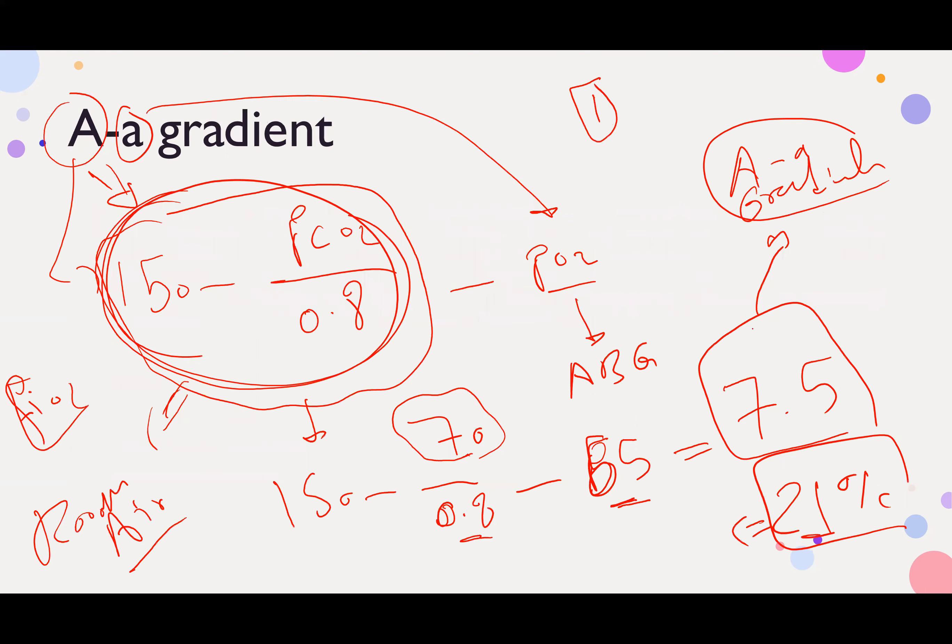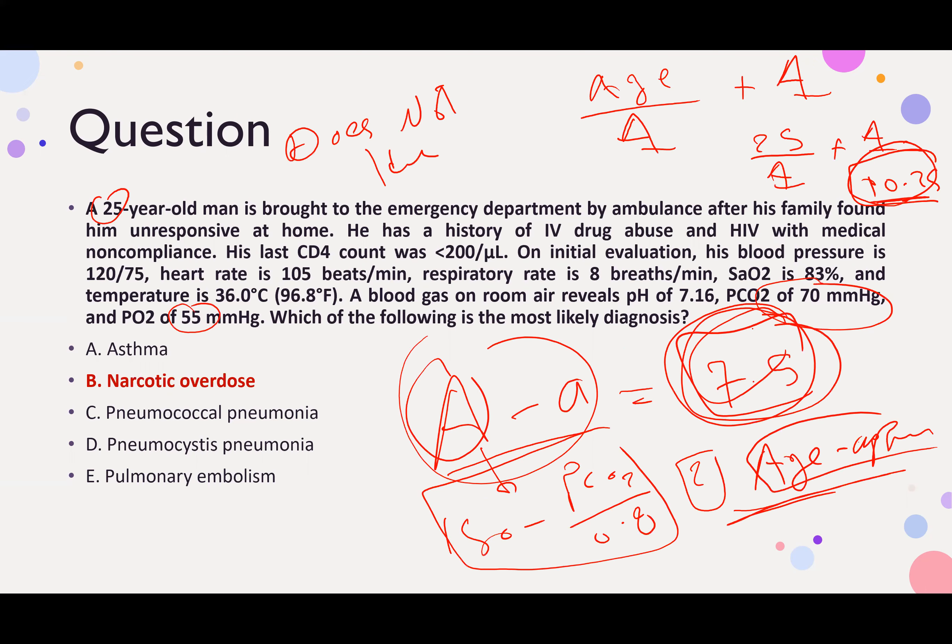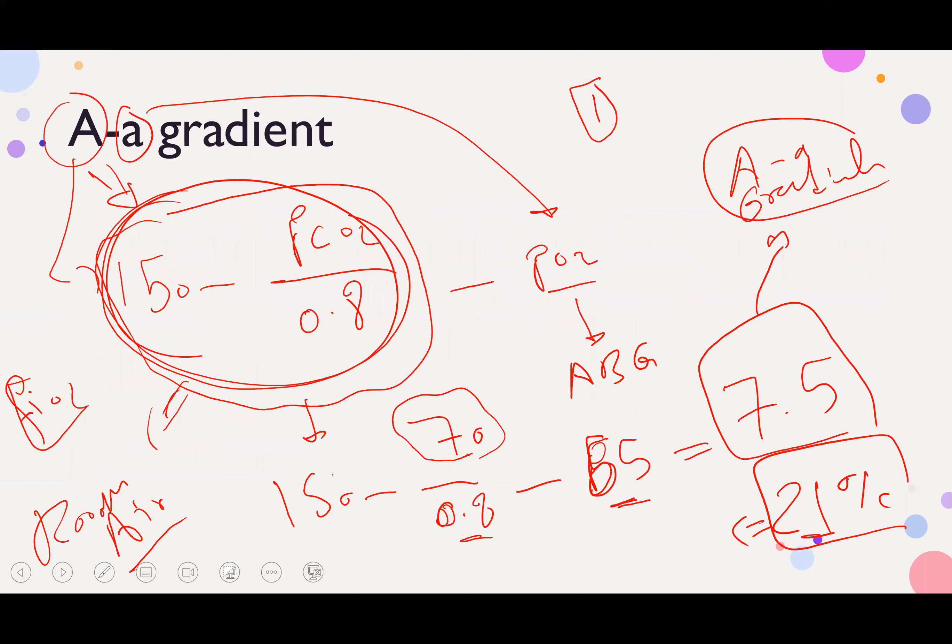What is the diagnosis in this picture? It's low AA gradient or normal AA gradient. It's a narcotic overdose. It's hypoventilation. We have explained the mechanism behind it in the previous video, but this is how you calculate the AA gradient.